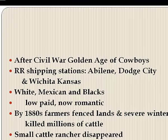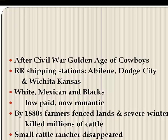The cowboys' life was far from romantic — they were very low-paid wage workers. Those long-distance cattle drives were horrible: hot and dry, you could get bit by a rattlesnake, run out of food, or the cattle could stampede. By the 1880s, farmers began fencing land with barbed wire, and bad winters killed millions of cattle. The small cattle industry kind of disappeared, replaced by a large industry dominated by huge ranches close to the railroads.